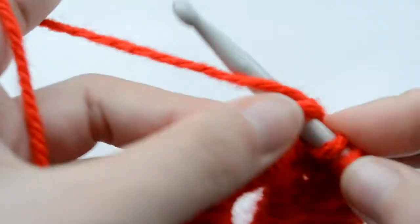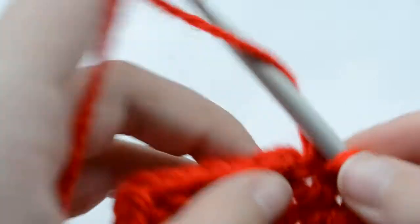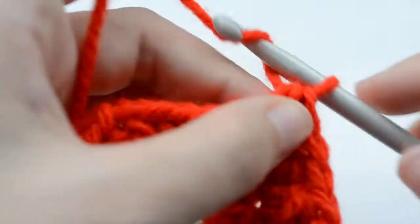Now we are going to go into the corners. We are working two half double crochets separated by a chain two.